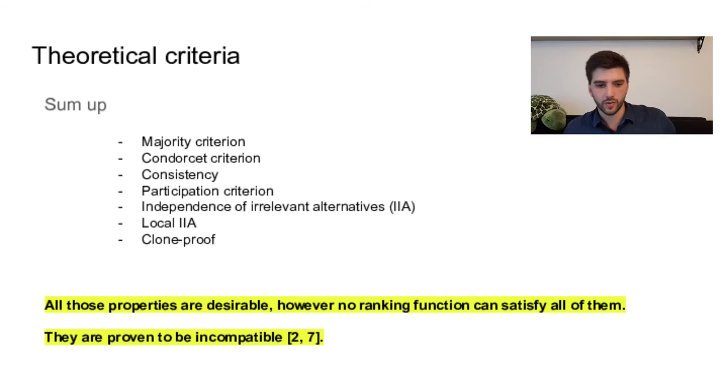So to sum up, we have the seven theoretical criteria which all are really interesting and desirable. However, it is proven that no ranking function can satisfy all of them at once. So you have Arrow's theorem and later Gibbard's theorem and more that show that they are totally incompatible. However, there is still a hope, because maybe in some cases in practice, they may be nearly satisfied.